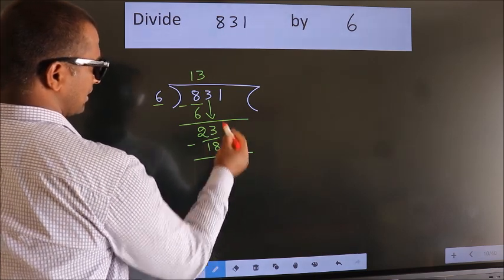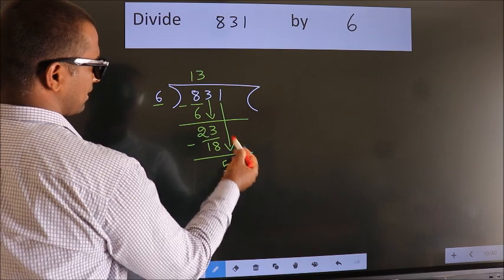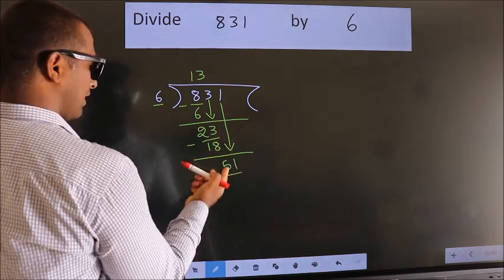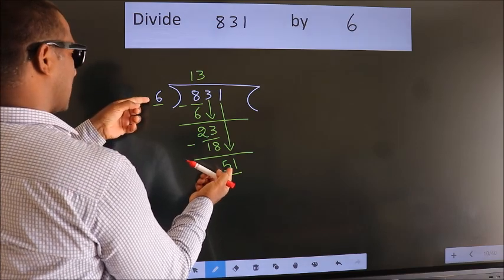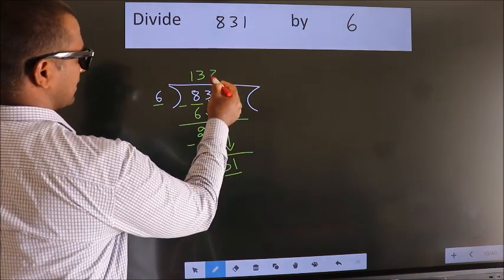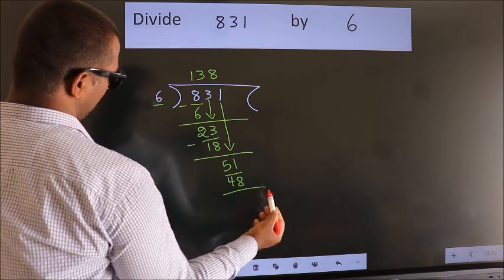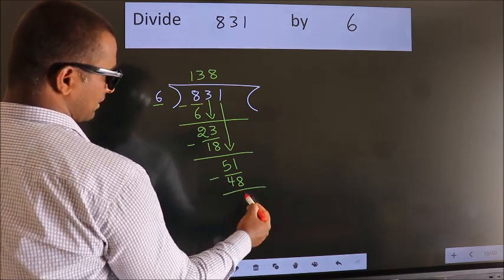After this, bring down the beside number. So, 1 down. So, 51. A number close to 51 in the 6 table is 6×8=48. Now we subtract. We get 3.